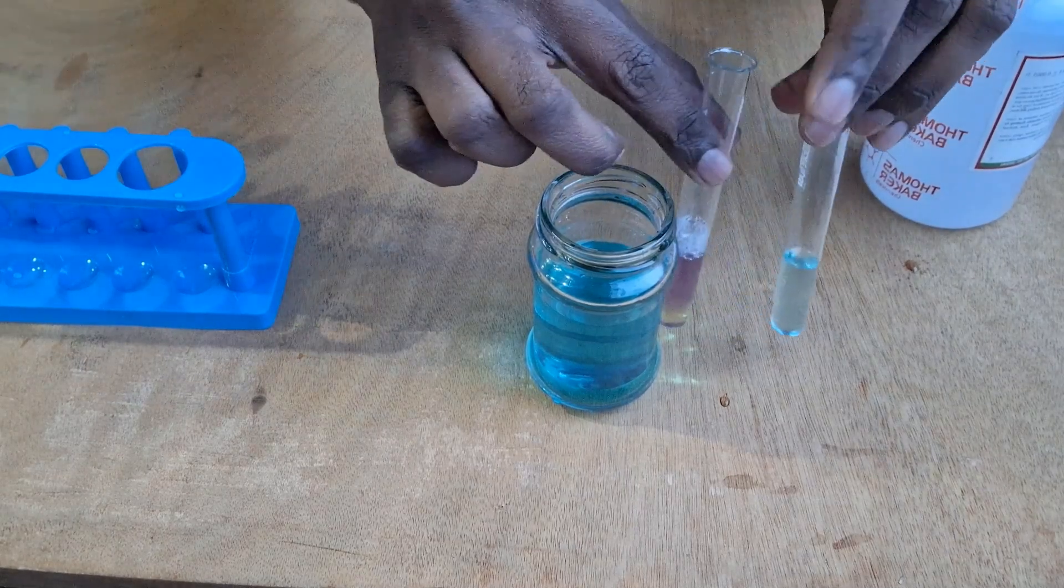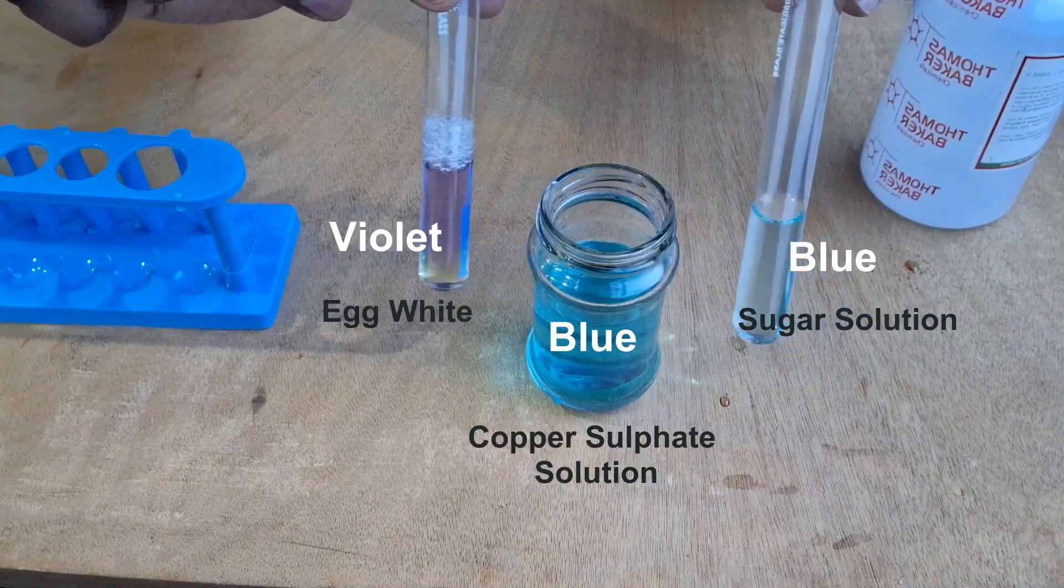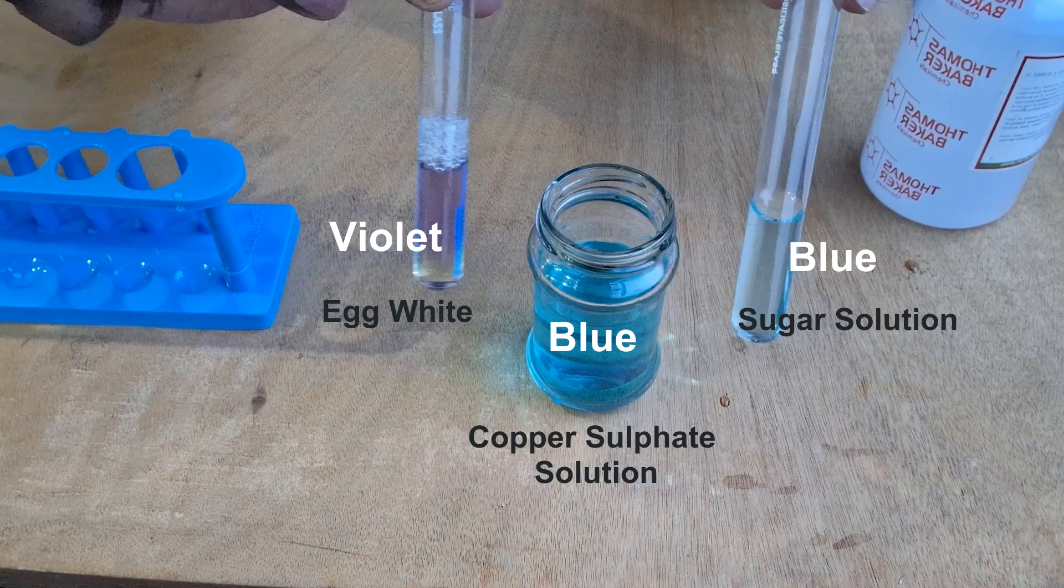You can compare all three solutions and check that there is no change in color in the case of the sugar solution. Let's pause for a moment and look at this: we have violet color with the egg white, and we have blue color with the sugar solution.